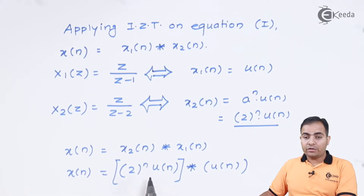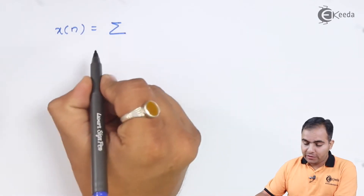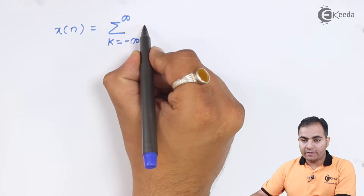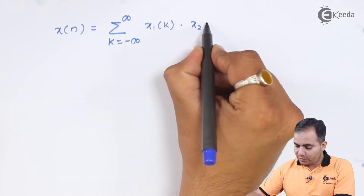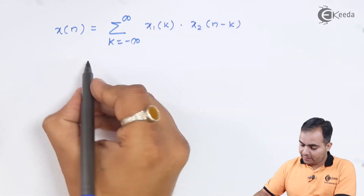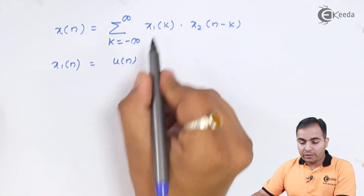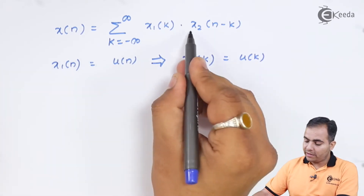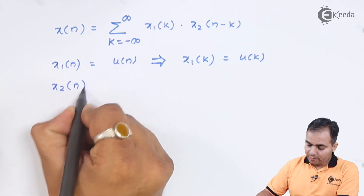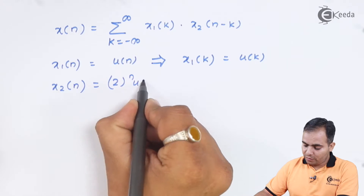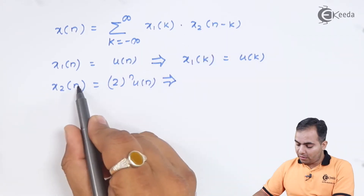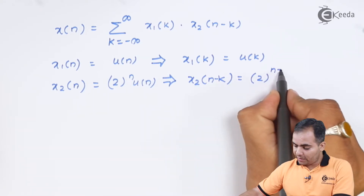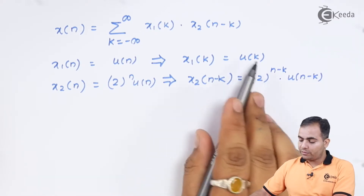Using the definition of convolution, the summation runs from k = -∞ to ∞. We replace x₁(n) by x₁(k) — substituting n with k — giving u(k). And x₂(n) becomes x₂(n-k) — substituting n with (n-k) — giving 2^(n-k) u(n-k).